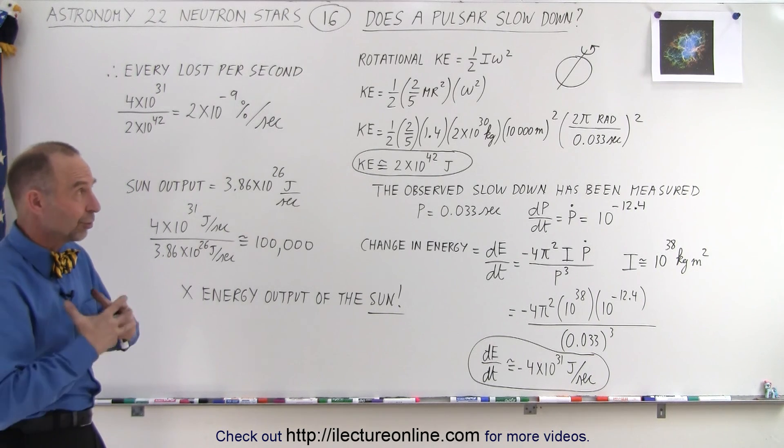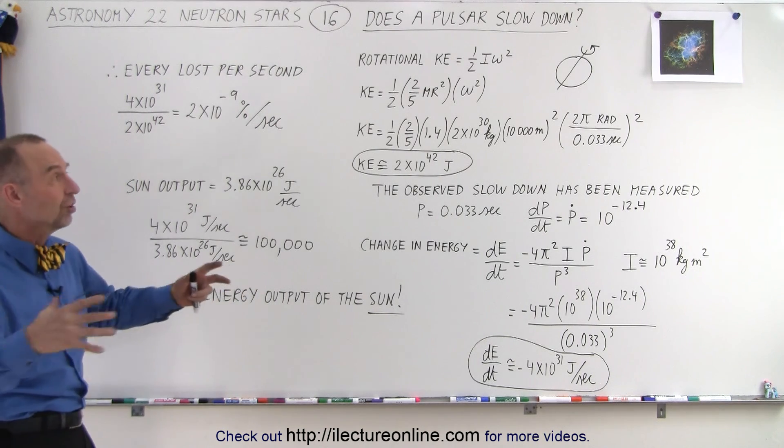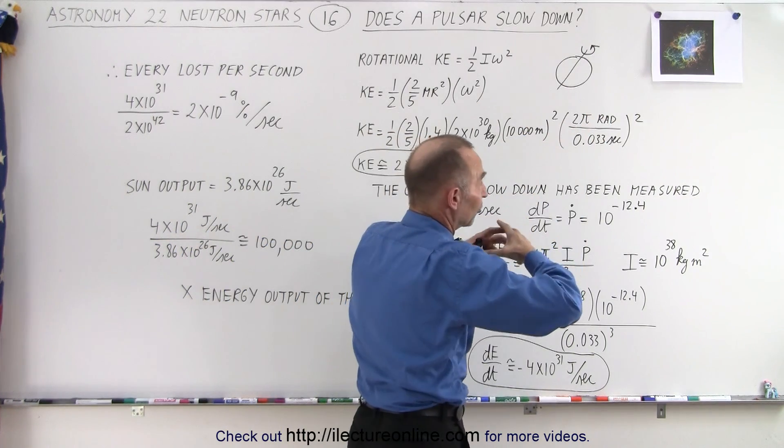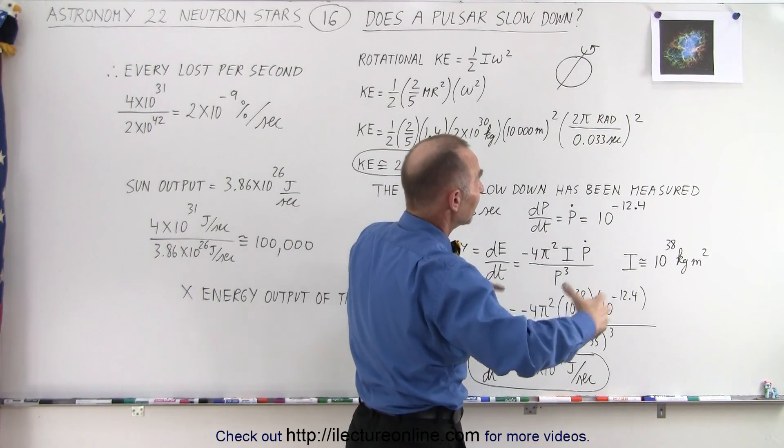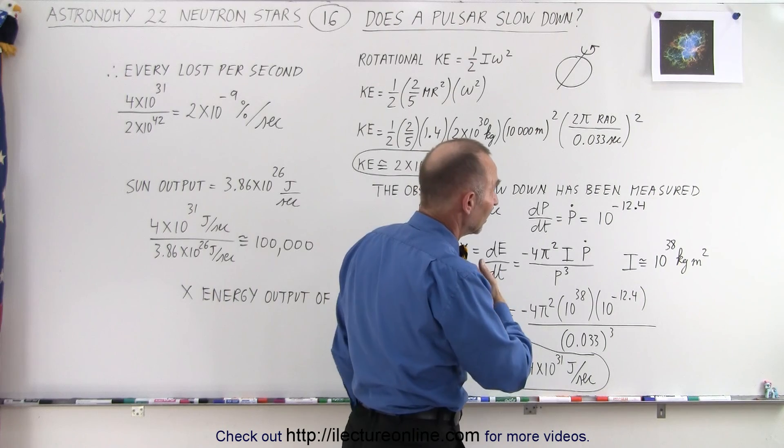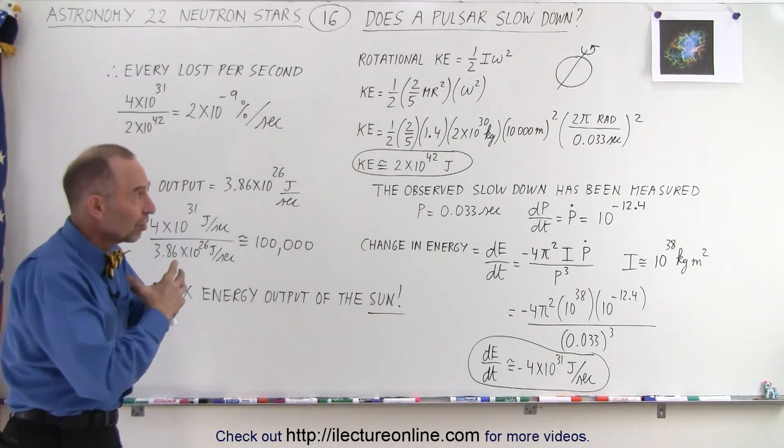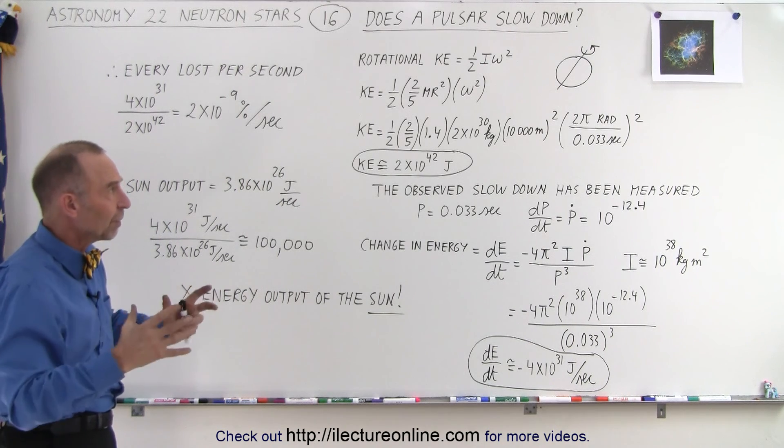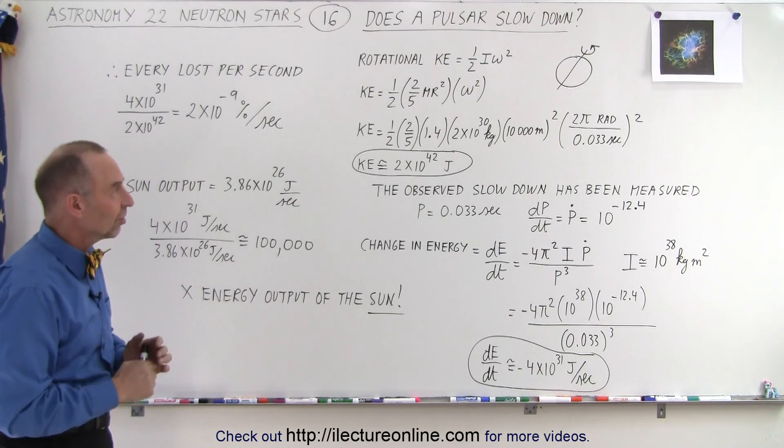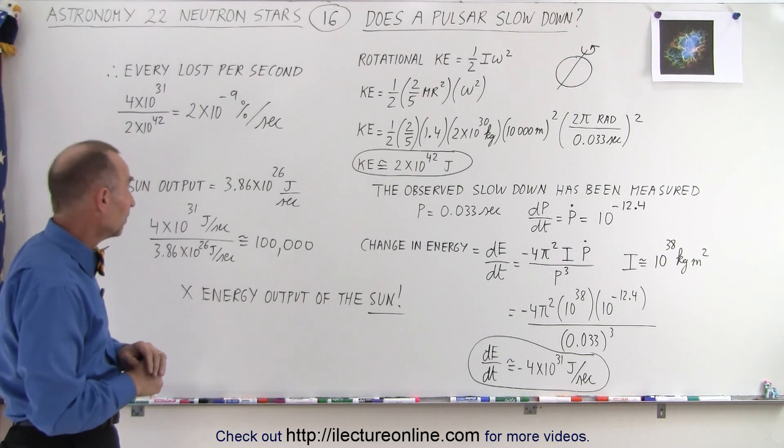The pulsar still produces vast quantities of energy, which is what causes the nebula around the pulsar to light up in the visible light, in radio radiation, in infrared radiation, in UV, X-ray, and gamma. It has an enormous amount of energy still being expelled on the second-to-second basis, and it will do that for a long time to come.